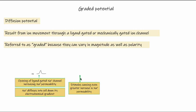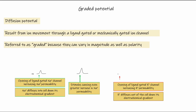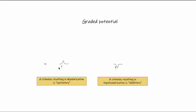Graded potentials are so named because they can vary in magnitude — they can be small or large. A stronger stimulus causes greater sodium permeability, more sodium movement, and a stronger graded potential. They can also vary in polarity: opening sodium channels produces a depolarizing, excitatory graded potential, while opening potassium channels produces a hyperpolarizing, inhibitory graded potential. Excitatory and inhibitory refer to their ability to bring the cell closer to or further from an action potential.